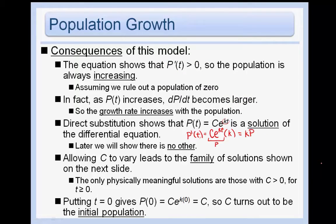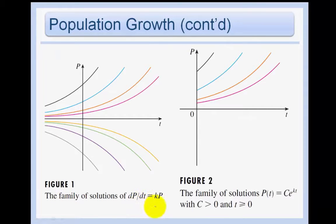Putting t = 0 gives p(0) = ce^(k·0) = c. So it turns out that c is our initial population. In figure 1 we see the family of solutions of dp/dt = kp, but we're only going to look at the ones where c is greater than 0, and that brings us to figure 2 of the family of solutions that make sense in this problem.